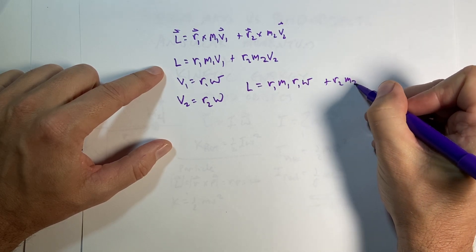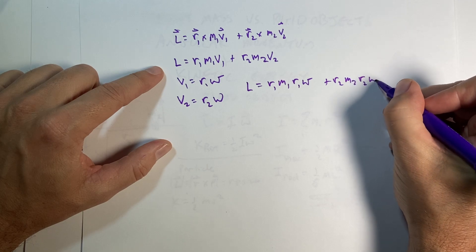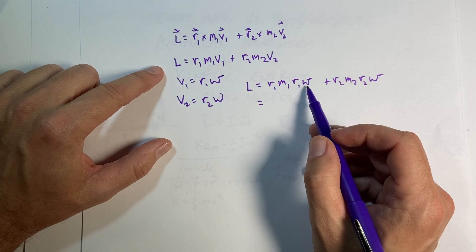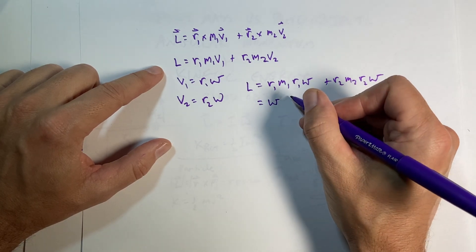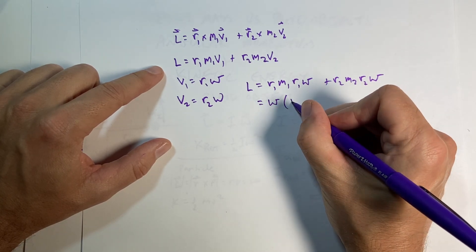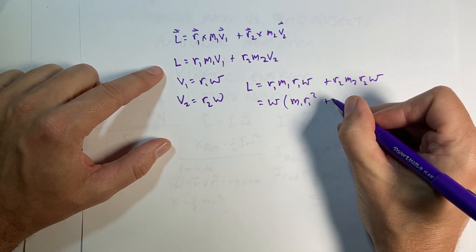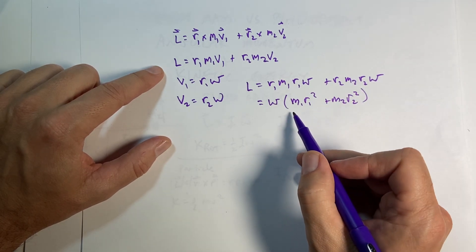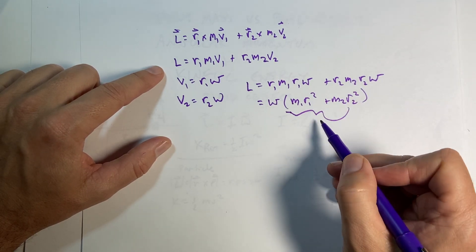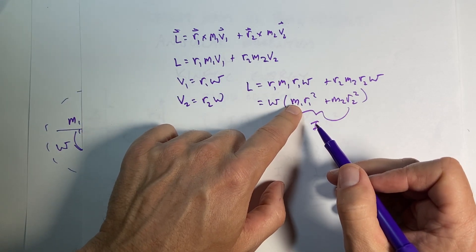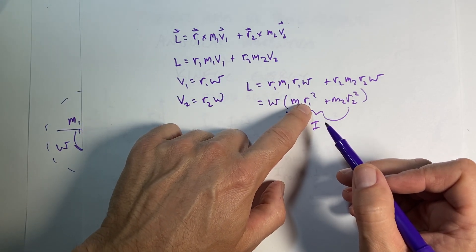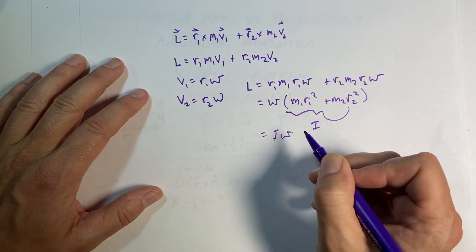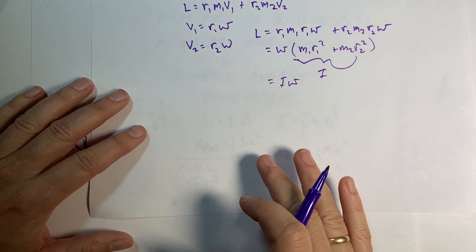So if I put those in, I get L equals r1 m1 r1 omega plus r2 m2 r2 omega. I can factor some stuff out here. I can factor out omega and I get, which is one thing, omega times m1 r1 squared plus m2 r2 squared. So this is the moment of inertia. If I take each mass times its distance from the axis squared and add it up, I get that. So this is the same as I omega. So this is the same thing.